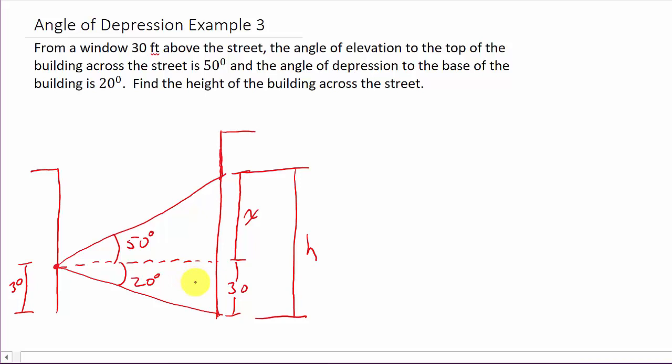All right, so, since we don't know this distance, we need to find this. We don't know this distance. Well, actually, we could find this. Let's call this, I don't know, we'll call this D.